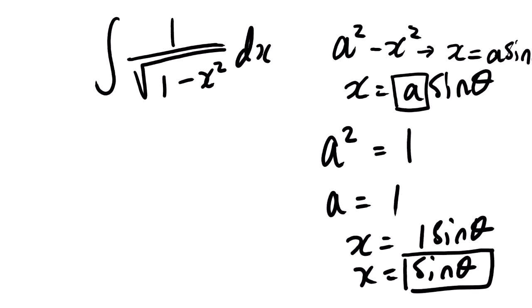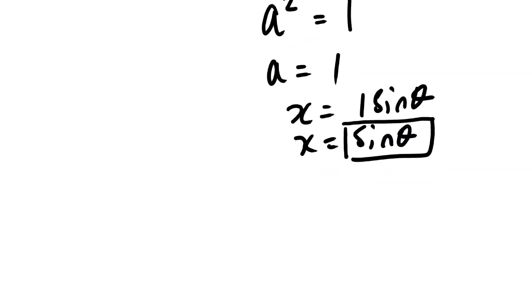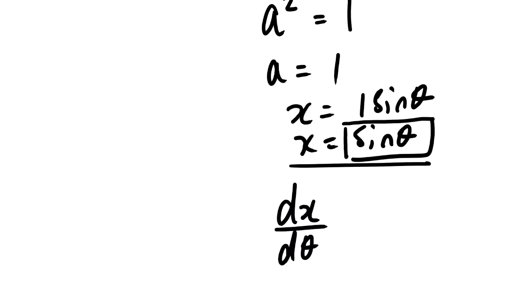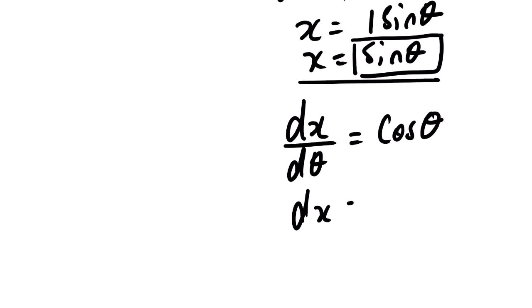Before we substitute, we also need to find the derivative. We compute dx over d theta, which equals the derivative of sin theta, giving cos theta. So when we solve for dx, we get dx equals cos theta d theta.